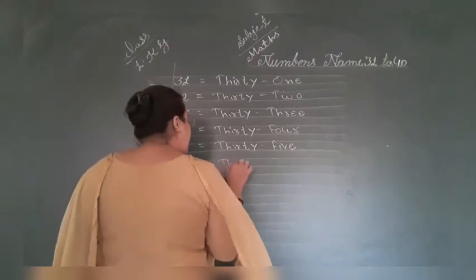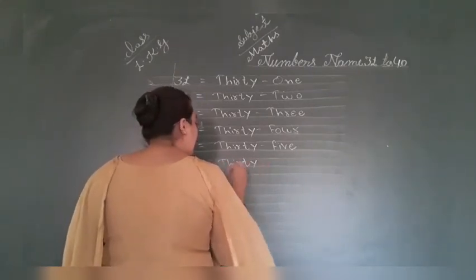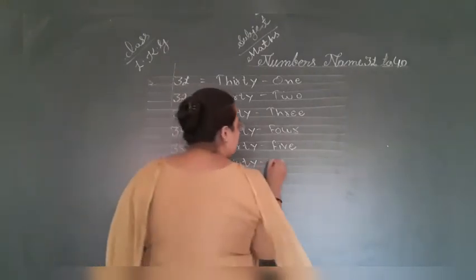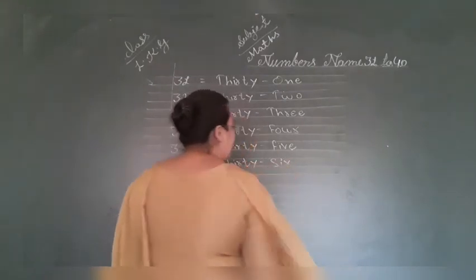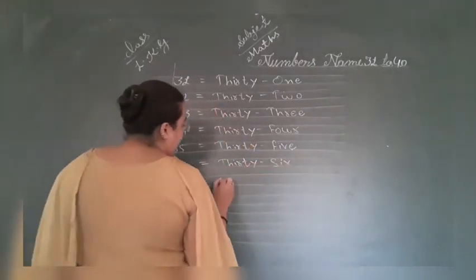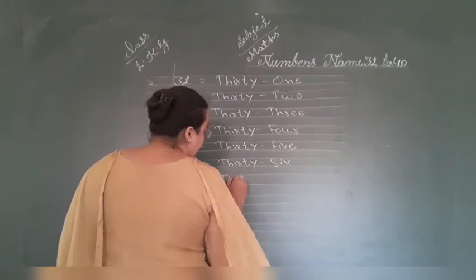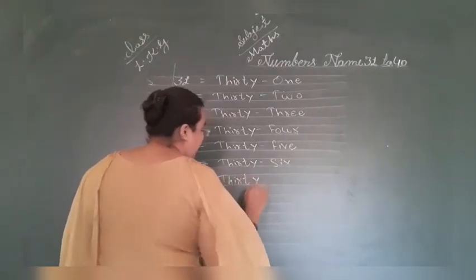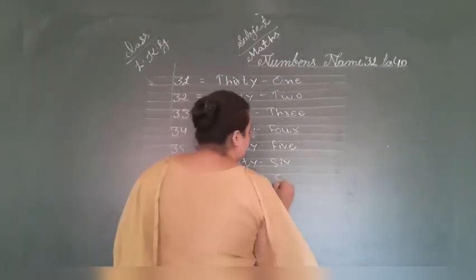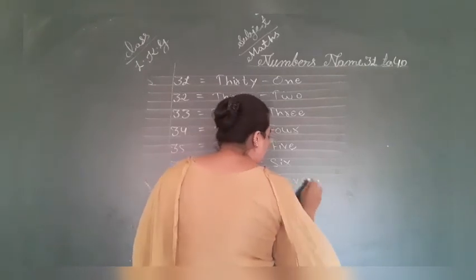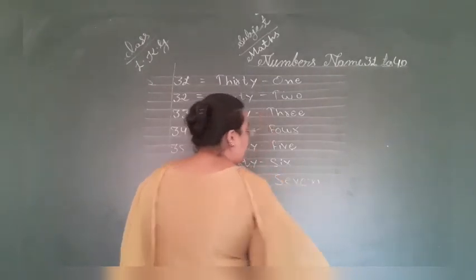36, THIRTY 30, SIX 6, 36. 37, THIRTY 30, SEVEN 7, 37.